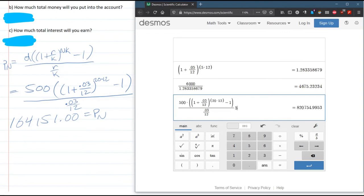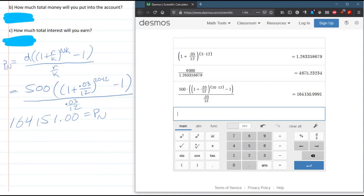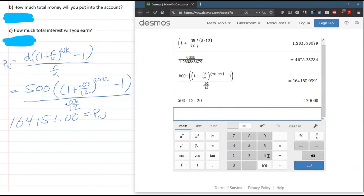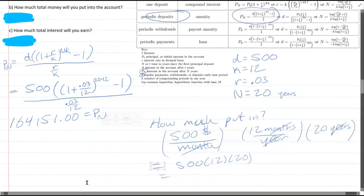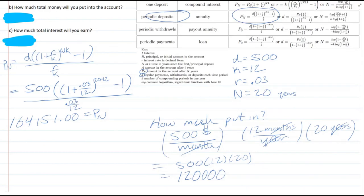And now you do have to do the 500 times 12 times 20, whatever that is. Don't want to do it there. Hit enter to get that out of there. 500 times 12 times 20, 120,000.